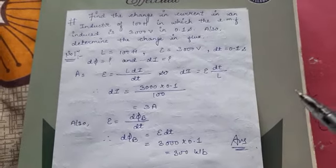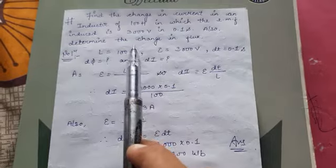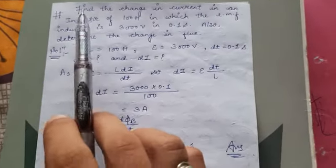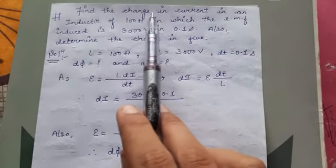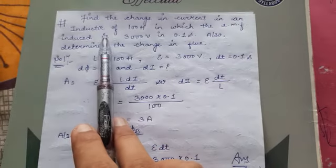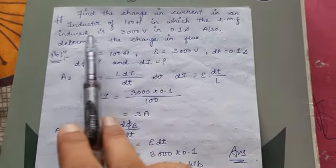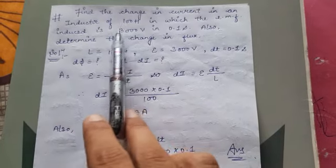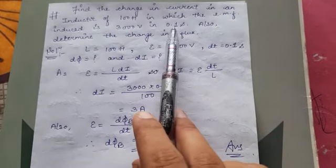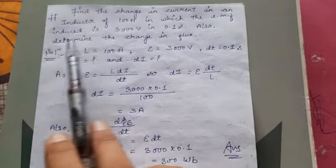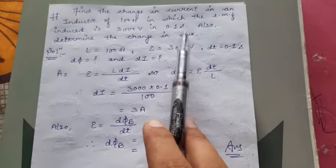Very good afternoon everyone. Next we have a numerical statement: find the change in current in an inductor of 100 henry in which the EMF induced is 3000 volt in 0.1 second. Also determine the change in flux.